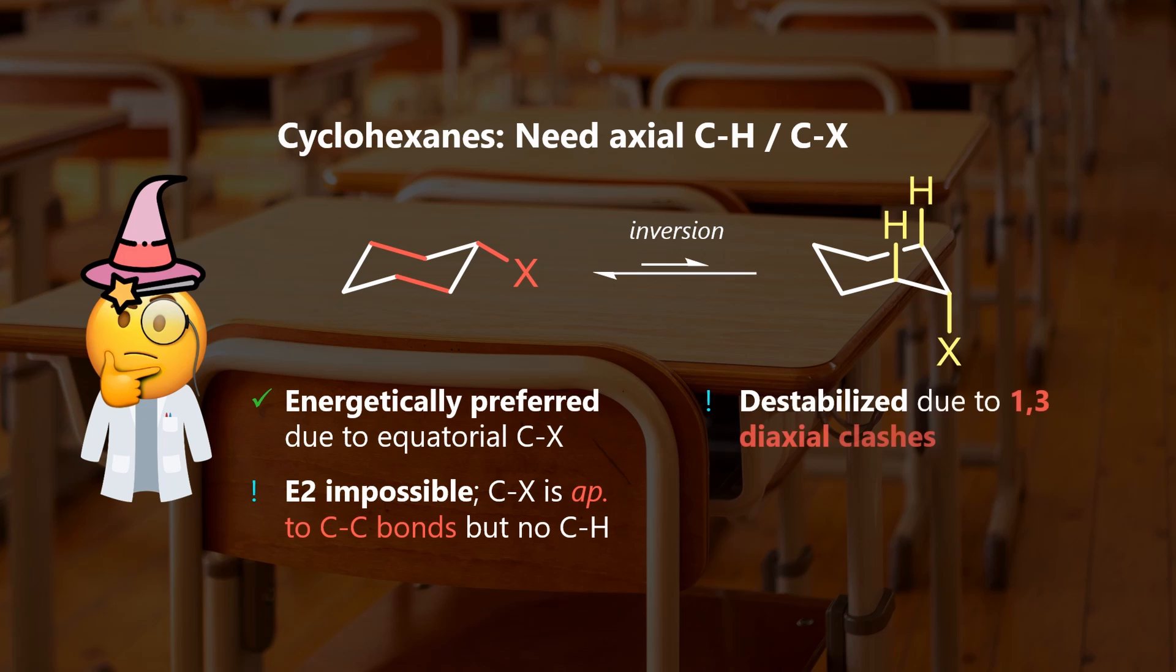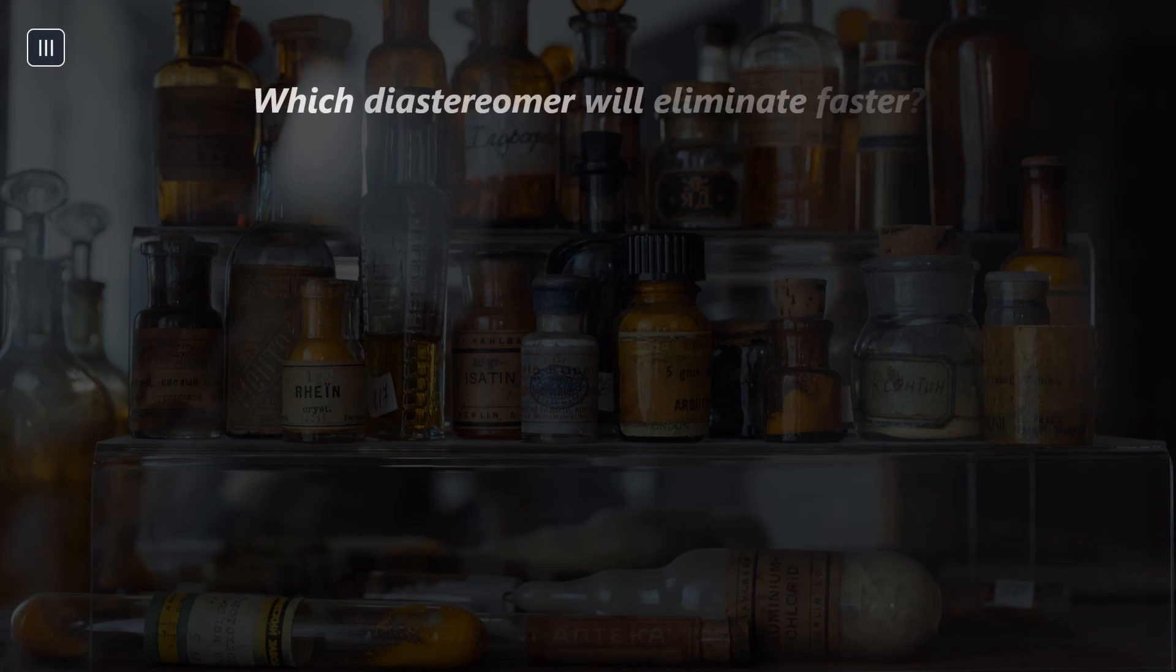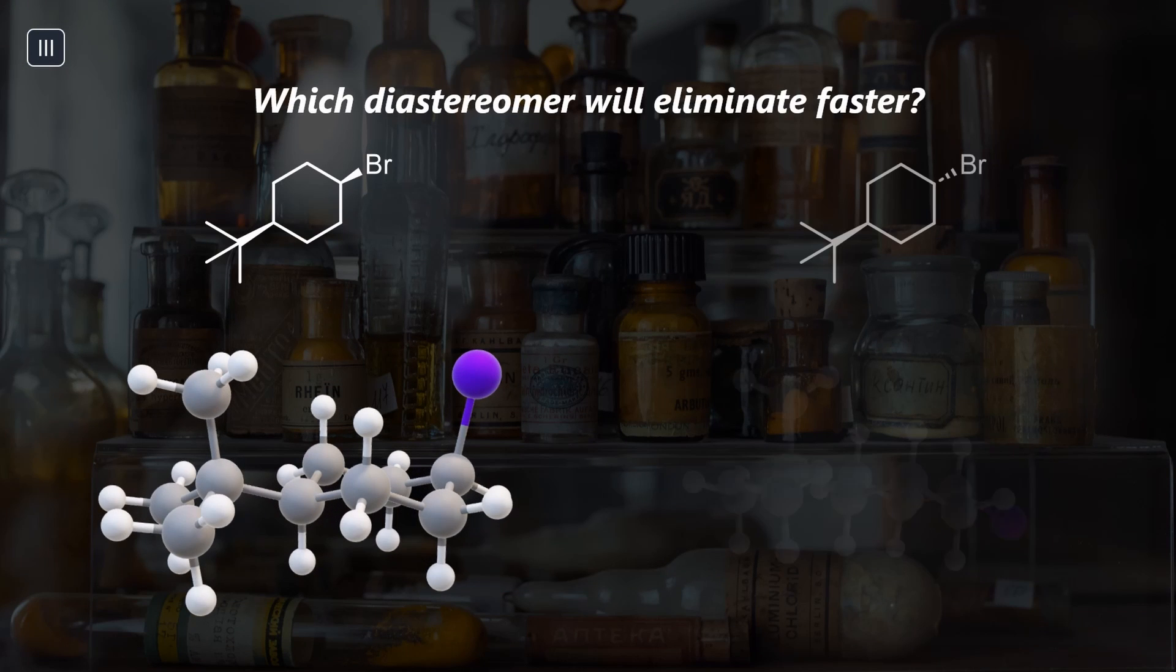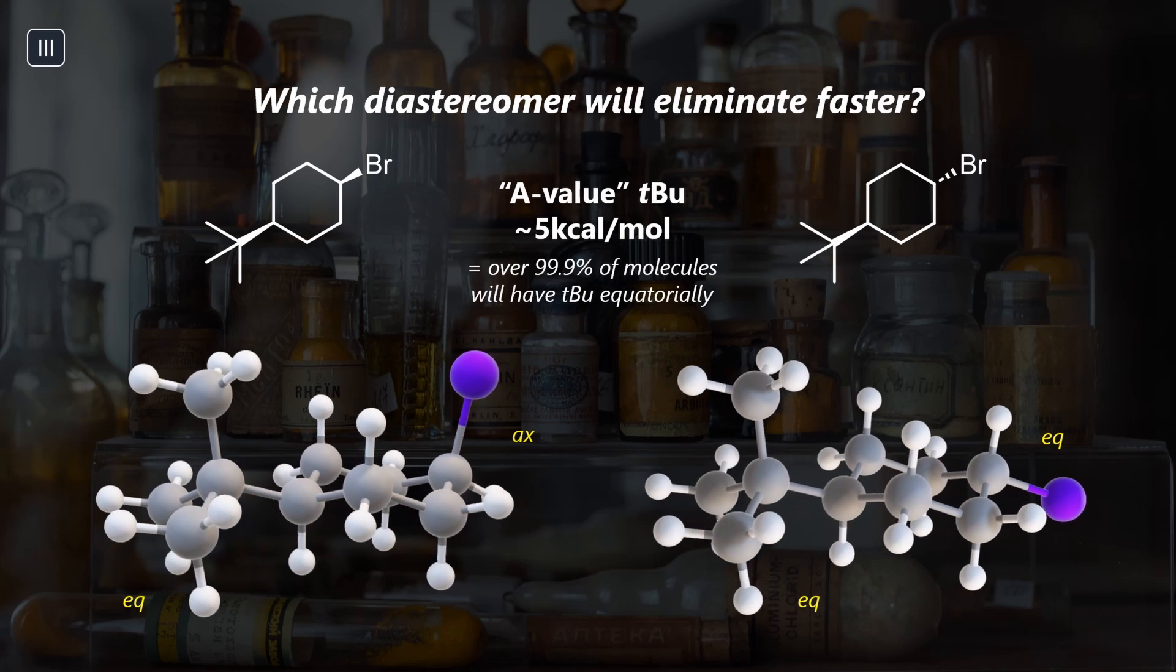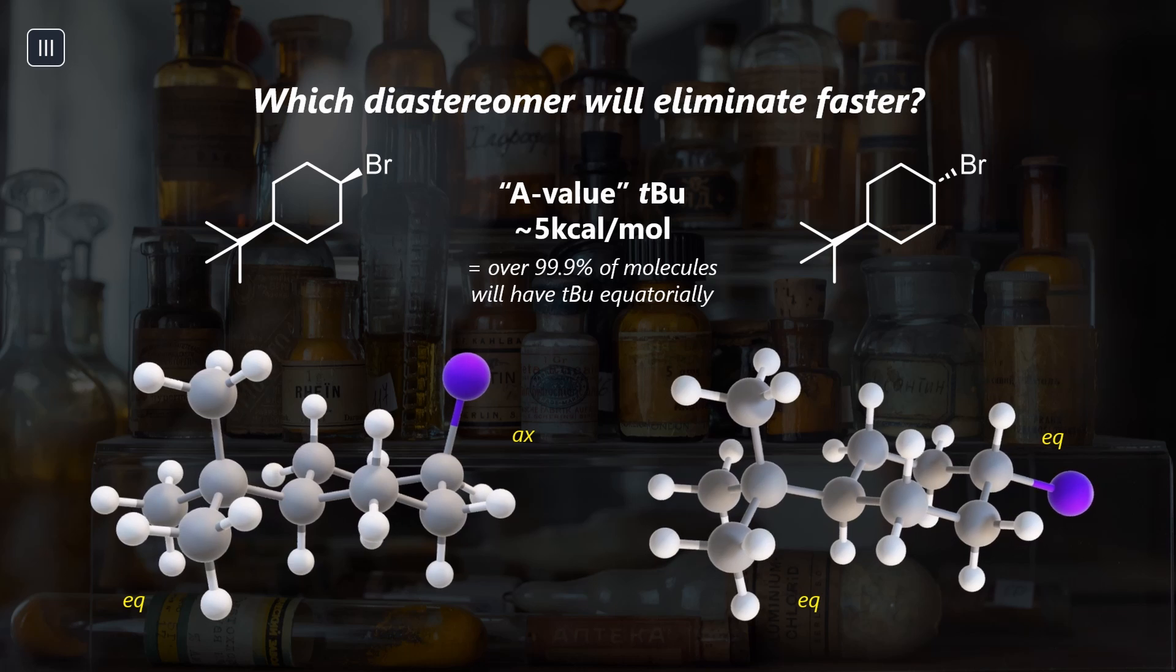The ring needs to flip to position the leaving group axially, which could be energetically disadvantageous. To illustrate this point, let's consider the elimination of these disubstituted diastereomers cis and trans.